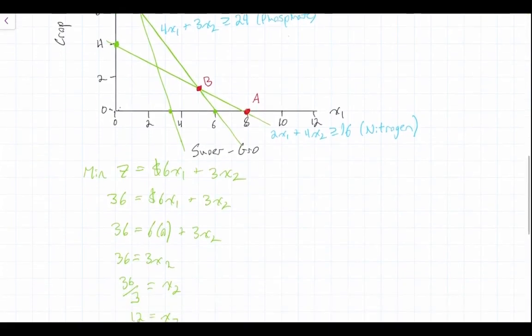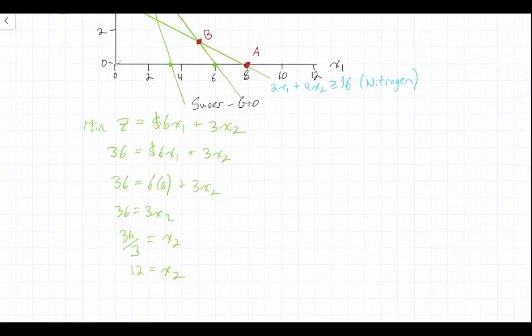And then we're going to do the same thing but this time set x2 equal to 0. So 36 equals 6x1 plus 3x2. Set x2 equal to 0. So 36 equals 6x1 plus 3 times 0. So that means that 36 equals 6x1. So 36 divided by 6 equals x1. So 6 equals x1.